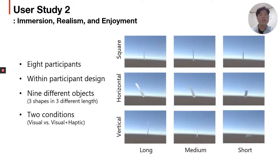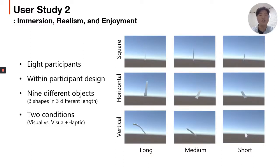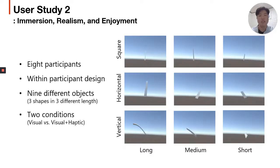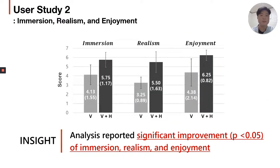Then we conducted a user study about immersion, realism, and enjoyment. The within-participant study had two different conditions, and users experienced nine different objects as shown in the slide. The result showed statistically significant improvement of all three factors — immersion, realism, and enjoyment — when haptic feedback was provided.